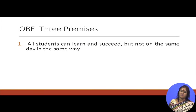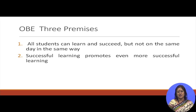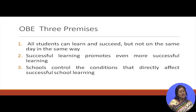OBE has three premises. First, all students can learn and succeed, but not on the same day or in the same way. Some students in class learn very quickly, but some may take two days — but they learn. As a teacher we have to remember that. Second, successful learning promotes even more successful learning — if a learner is successful, it only encourages them to be more successful. As a teacher it is always good to motivate learners so they can learn more successfully. Third, schools only control the conditions that directly affect successful school learning.